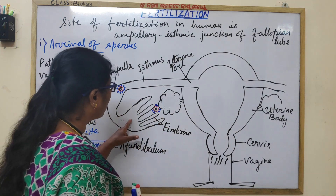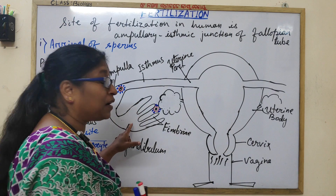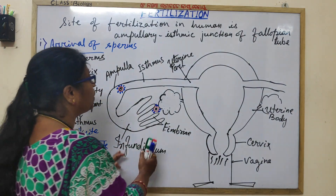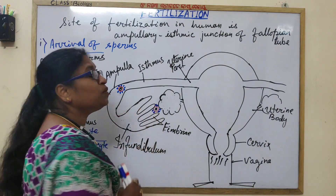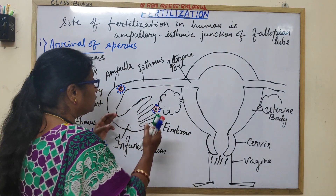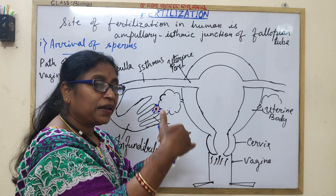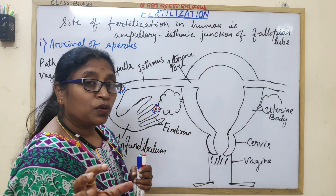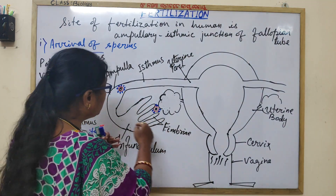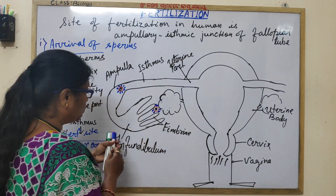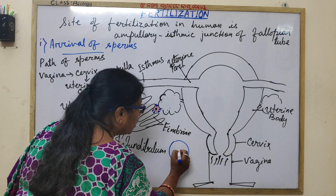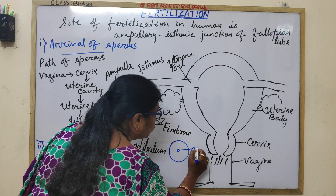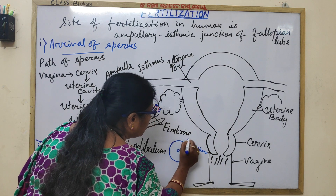The wider funnel-shaped part of the fallopian tube is called the infundibulum, present near the ovary. The infundibulum receives the secondary oocyte during ovulation. The fimbriae help in pushing the secondary oocyte, along with its surrounding corona radiata cells, into the infundibulum through the ostium.